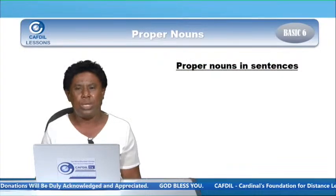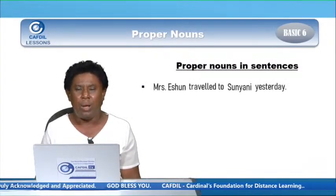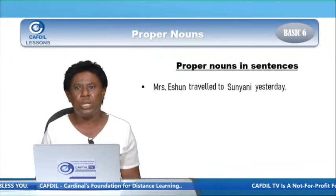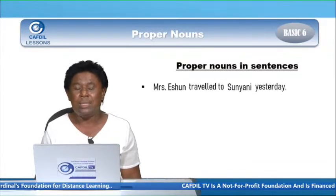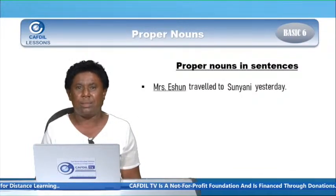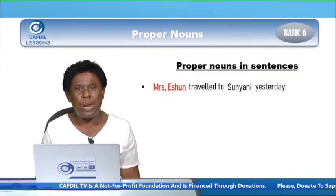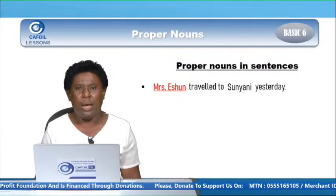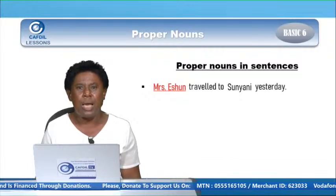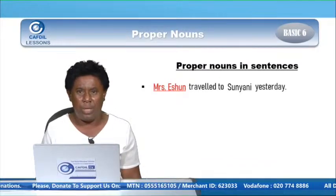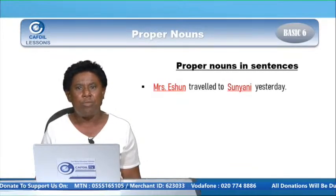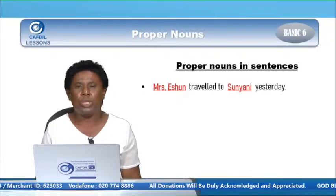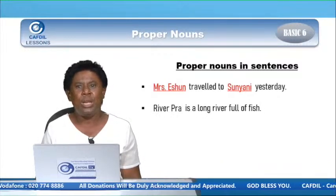Now we have some proper nouns in sentences. Let's see how the sentences go. Sentence one: Mrs. Eshan traveled to Sinyani yesterday. We are going to underline the proper nouns in this sentence. Mrs. Eshan — it's a proper noun because it's a particular name given to a woman. It starts with capital M for Mrs., capital E for Eshan. And she traveled to Sinyani — it's also a particular town, starting with capital S, and it's a proper noun.